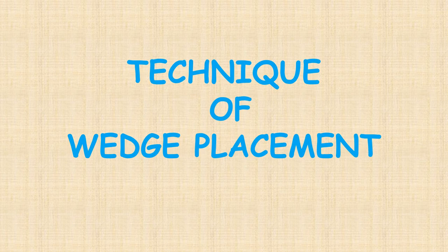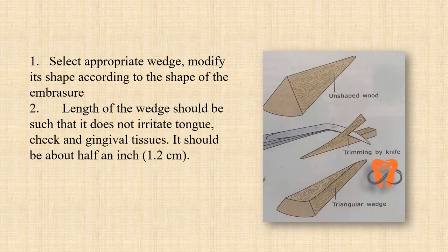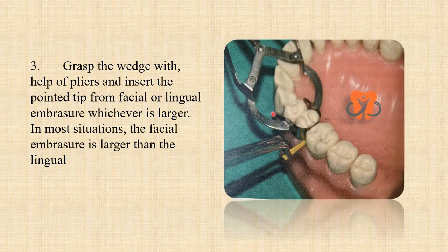Coming to the technique of wedge placement. The first step is to select an appropriate wedge and then modify its shape according to the shape of the embrasure. The length of the wedge should be such that it does not irritate the cheek or the gum, and this happens when it is about half an inch long. Grasp the wedge with help of pliers and insert it in the embrasure — this is the facial embrasure. We can insert it in the lingual embrasure also, but normally we insert it in the embrasure which is larger, and mostly that is the facial embrasure.